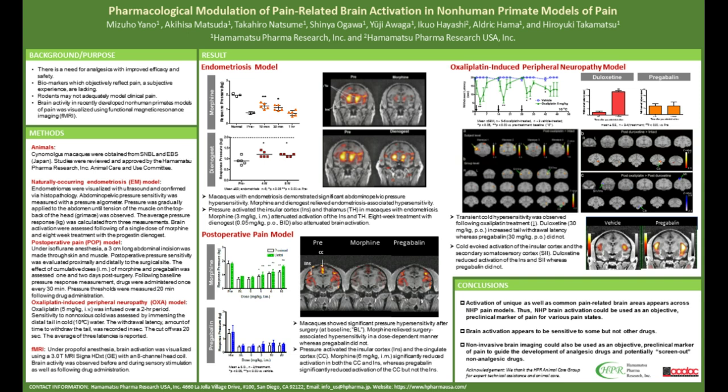Let's look at the results section. For the endometriosis model, we assessed pain behavior using pressure testing where pressure was applied to the abdominal region of the animal. As you can see in the graph, the threshold for the pain-related response is reduced, which means the animals experience pain with pressure applied to the abdominal region. This response was improved with morphine administration as well as hormone therapy.